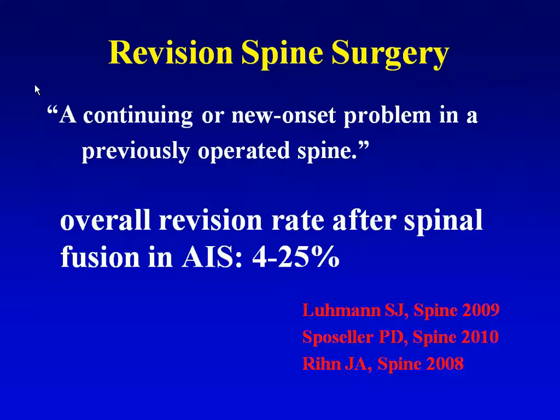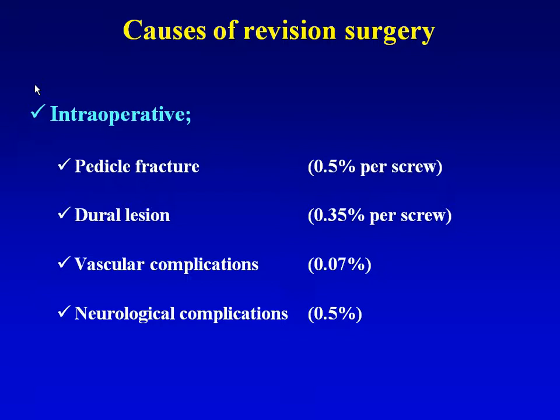The overall revision rate after spinal fusion in adolescent idiopathic scoliosis is 4 to 25%. Intraoperative causes of revision surgery include pedicle fracture, dural lesion, vascular complication, and neurologic complication.